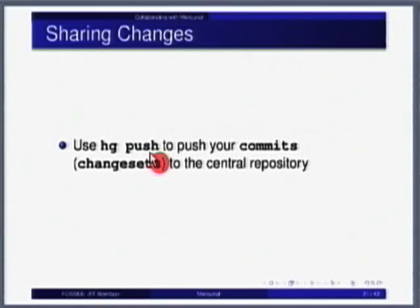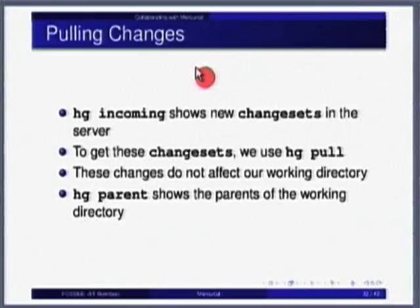Given two repositories — one clone of another — if I make changes on the right-hand side and I want to push these changes, I say hg push on this, specify that other project, and it will push all of these changes into this. The only problem is I need to have write privileges, which I may or may not have. On the other hand, I can pull.